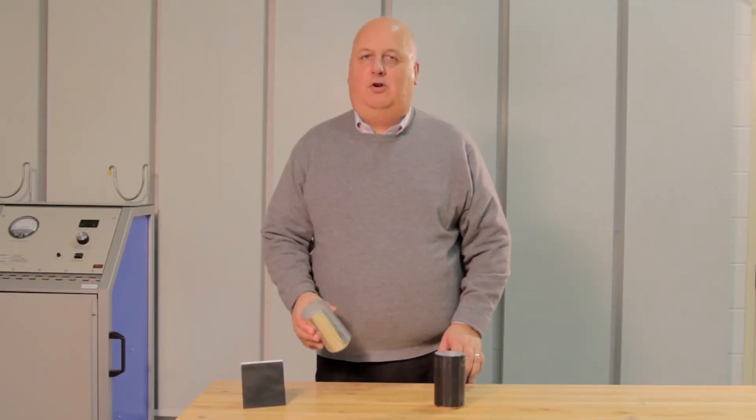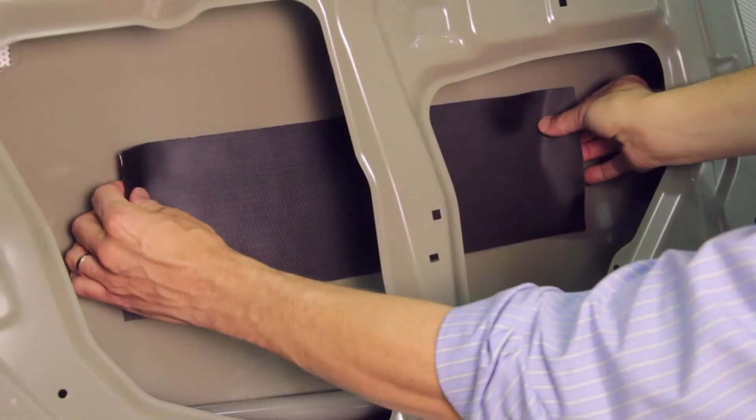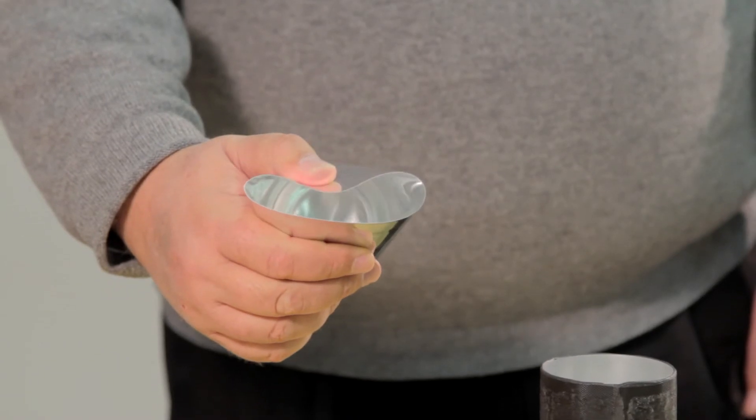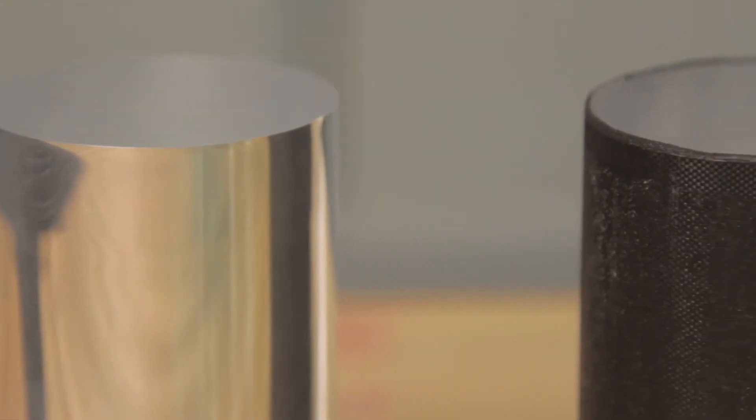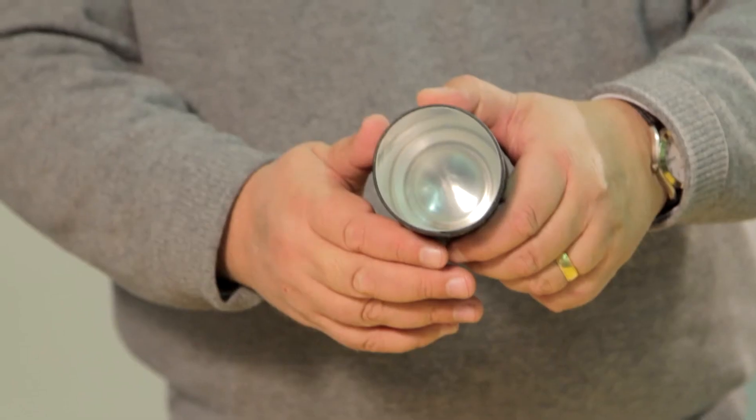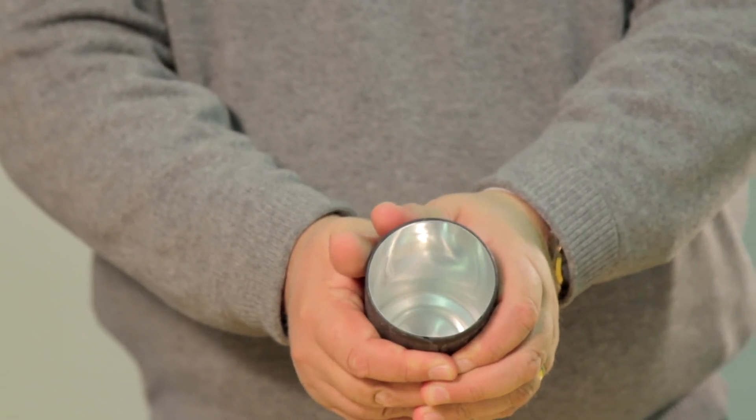Using a structural patch can significantly increase strength on a door or a fender. This is a simple aluminum can - see, it's very easy to crush. This is a can that's been wrapped with a structural patch. It is impossible to crush.